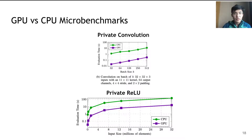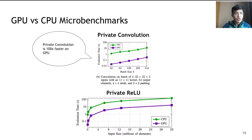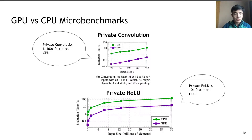Finally, we ran a microbenchmark comparing MPC protocol performance on GPU versus CPU. For private convolution, running the protocol on GPU is 100x faster than on CPU. For private ReLU, running the protocol on GPU is 10x faster than on CPU. Our microbenchmark shows that both linear and nonlinear operations benefit from GPU parallelism.